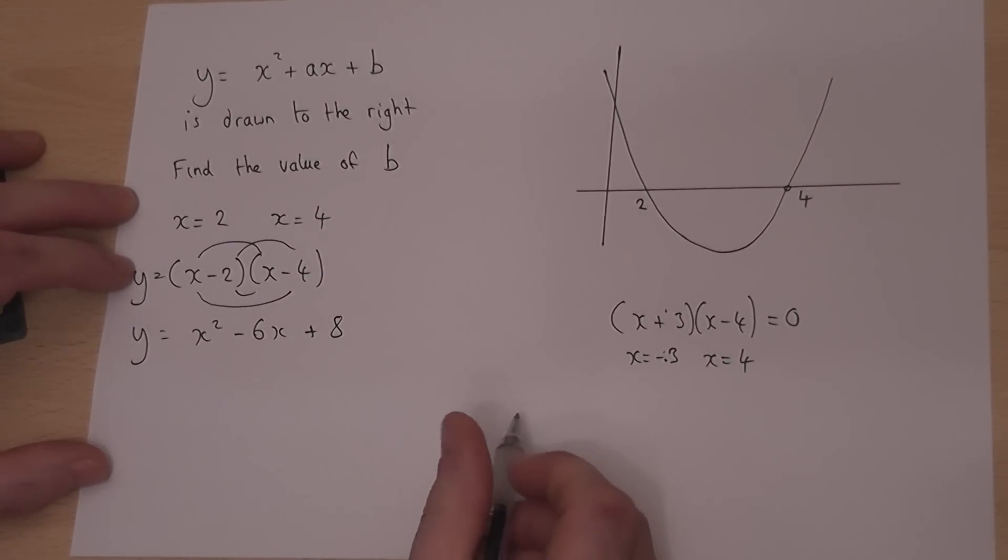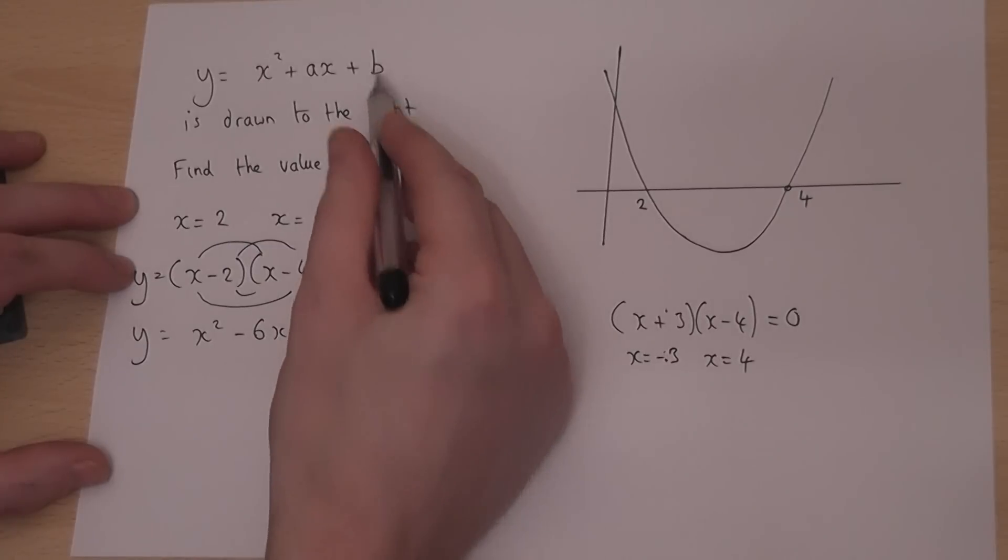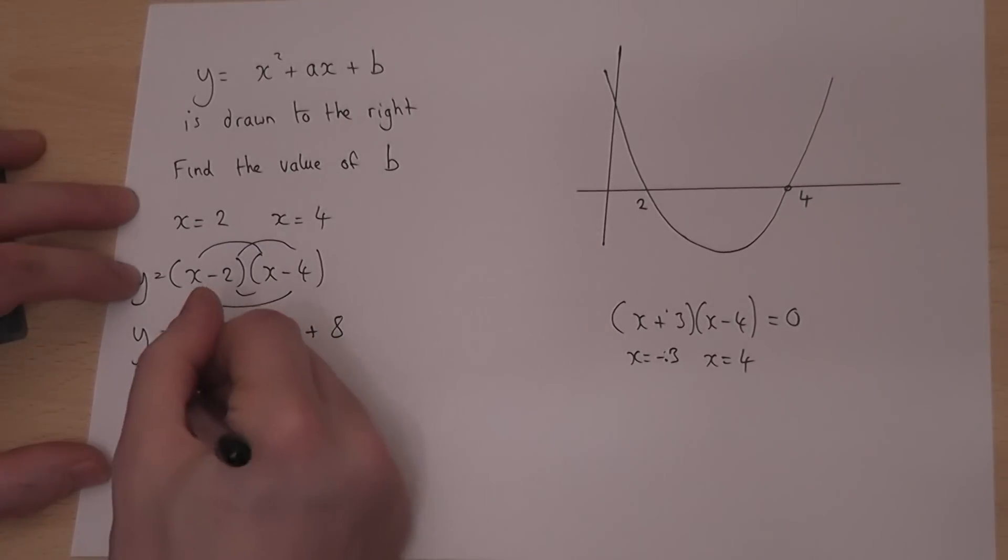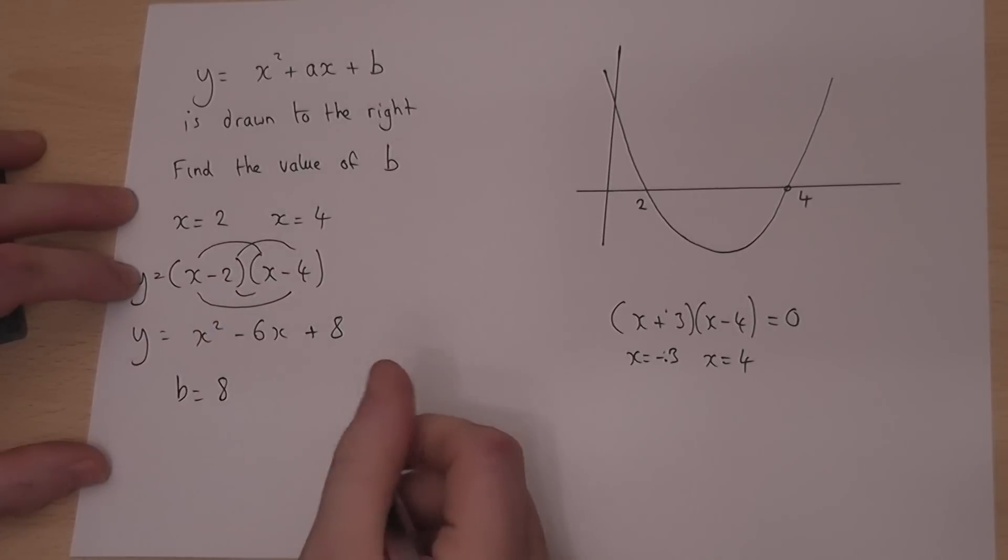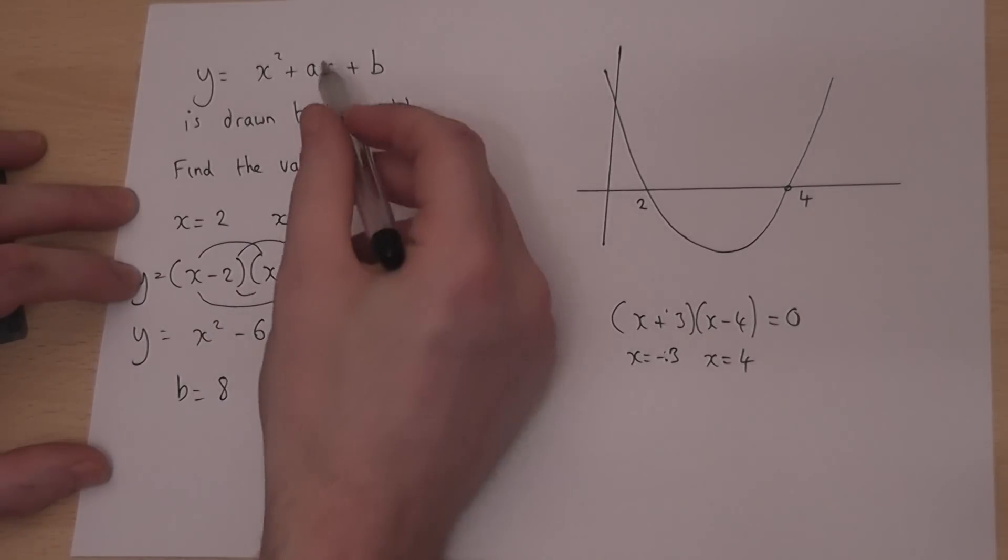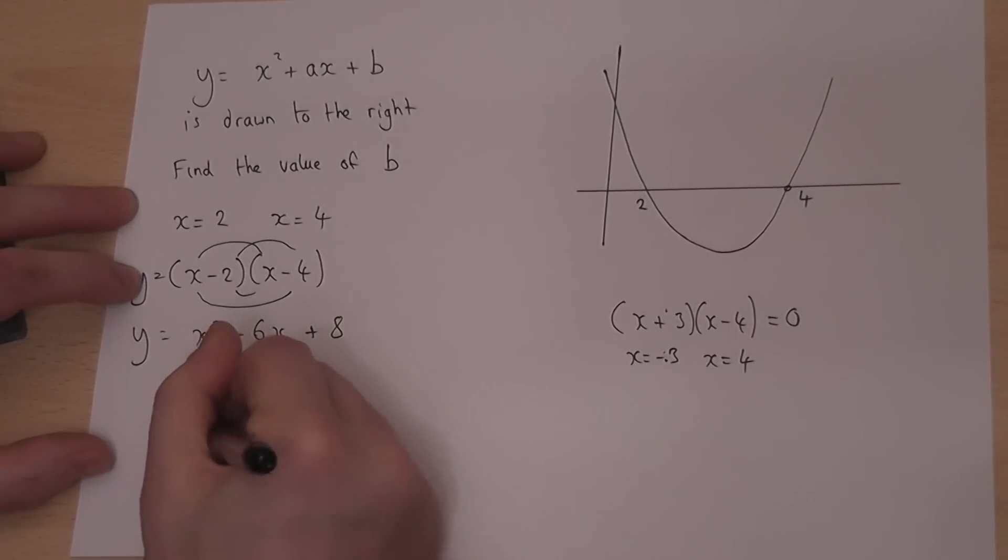So if we're asked to find the value of b, we just compare and contrast. So b must equal 8. The question could also be, what does a equal? Well, a must equal minus 6.